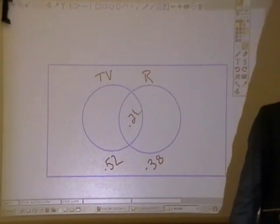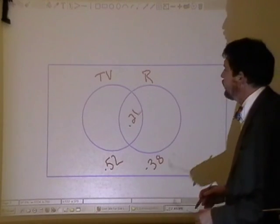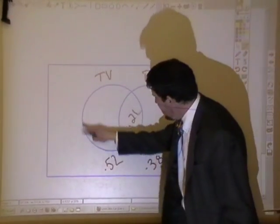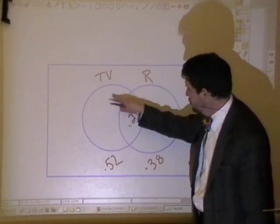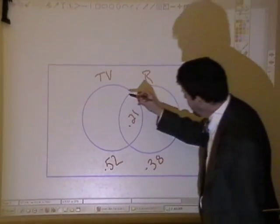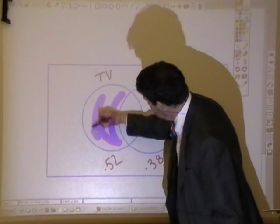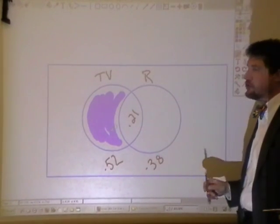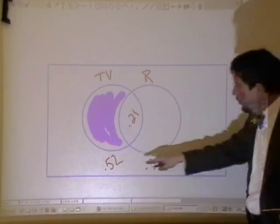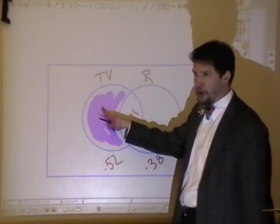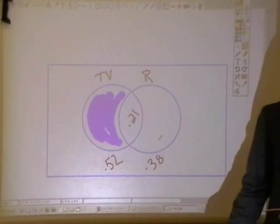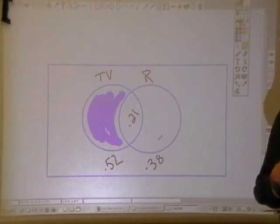Question A said: a TV but no refrigerator. So I'm looking at being in this circle but not in this section, just this section. That's the three-quarter moon section over here. That three-quarter moon section right there is going to be 0.52 minus the 0.21, which is going to be 0.31.